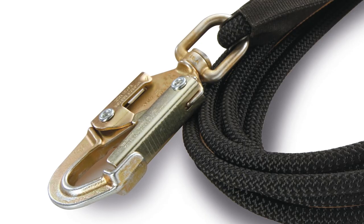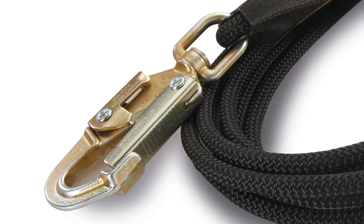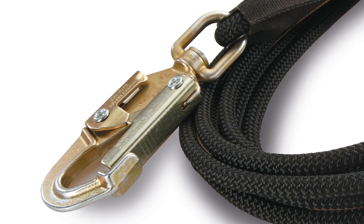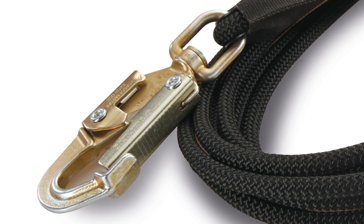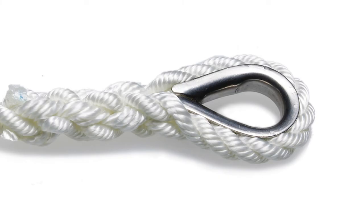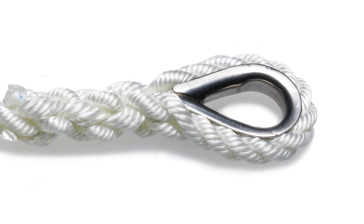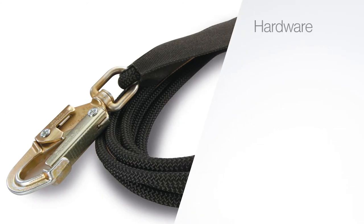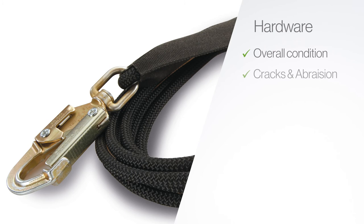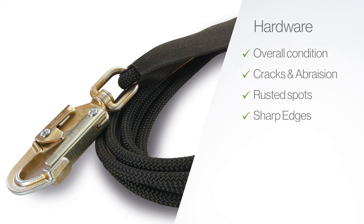The next thing you want to check for in your inspection is any permanently installed hardware that is now part of your rope system. This would include things like snap hooks, steel or plastic thimbles, O-rings, anything that is now permanently sewn or spliced into your rope as a defined termination. You want to check those for their overall condition looking for any cracks, sharp edges, high abrasion spots, worn spots, rusted spots, anything that could either impact the functionality of that piece of hardware or impact the rope such as a sharp edge that could cut the rope itself.